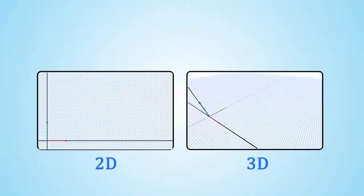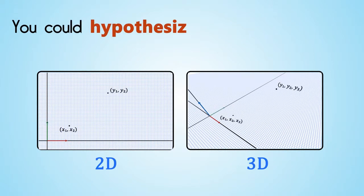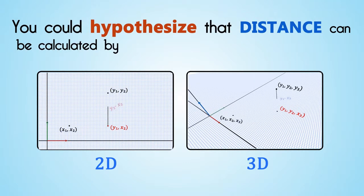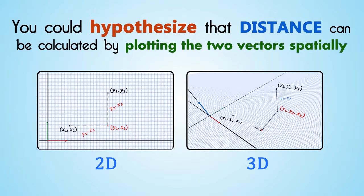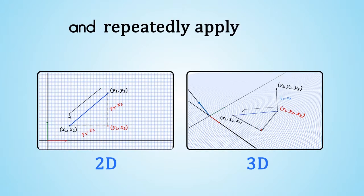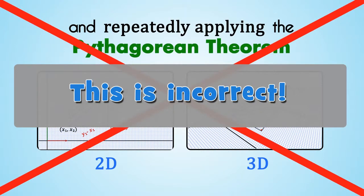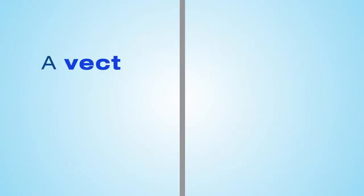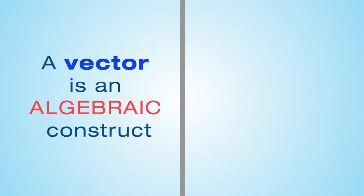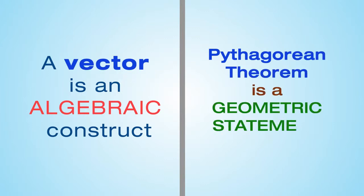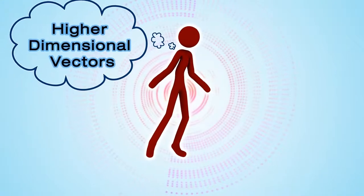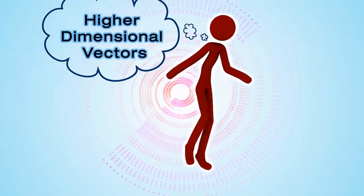From the 2D and 3D case, you could hypothesize that distance can be calculated by plotting the two vectors spatially and repeatedly applying the Pythagorean theorem. But this is incorrect. A vector is an algebraic construct, while the Pythagorean theorem is a geometric statement about lines in the plane. We can't even visualize higher dimensional vectors.